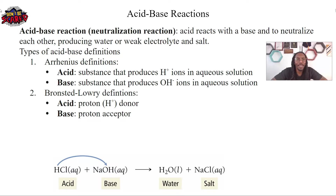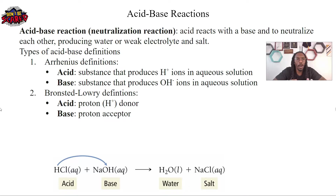The first is our Arrhenius definition. Basically, this was the very first type of definition that was going around for a long time. An acid was defined as a substance that produces H+ ions in an aqueous solution, and a base is a substance that produces OH- ions in an aqueous solution. For a very, very long time, this is what we assumed the acid and base was — you had to produce certain ions in aqueous solutions.